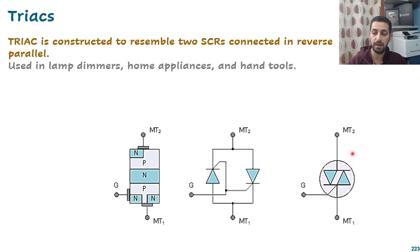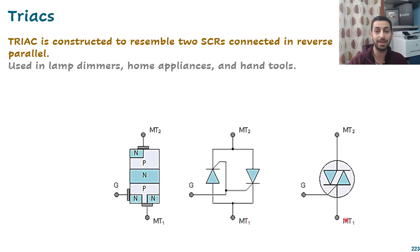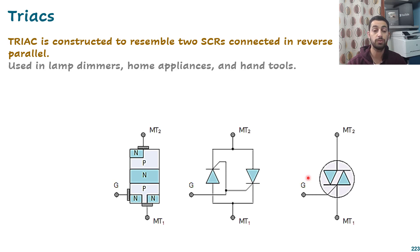The triac has two main terminals called MT1 and MT2 — not anode and cathode anymore. Anode always should be positive and cathode negative, but since the triac can accept both polarities, they are called MT1 and MT2. There is also a third terminal called the gate, which provides the ability to give a pulse and turn the triac on.